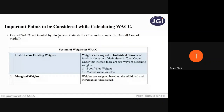In weighted average cost of capital, how you calculate the total cost completely depends on weights, because the name itself starts with weighted average. So obviously you are going to assign weights to each of these sources of finance. There are two types of weights: a system of weights in WACC are of two types — one is historical or existing weights, and one is marginal weights.